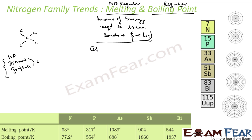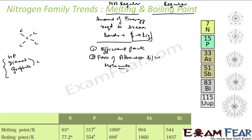The melting point depends on the packing structure and the force of attraction between molecules. Since it depends on these forces, it does not show any regular trend. Carbon forms a complex structure and has a very high melting point. Nitrogen exists as N2 — it is dimerized into one stable compound, so there is not much interaction between units, and nitrogen will have a low melting point.